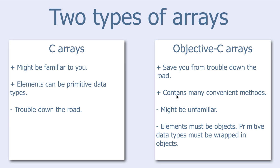The disadvantage of Objective-C arrays is that they might be unfamiliar to you, and also that elements must be objects. So if you want to put primitive data types into these arrays, you must first wrap those data into objects.